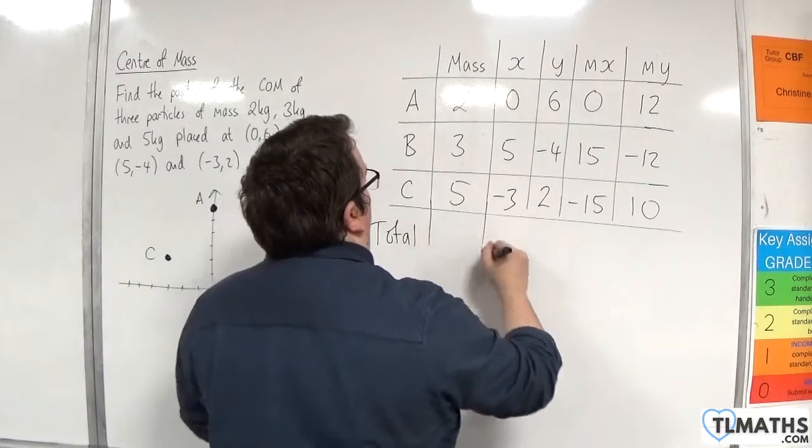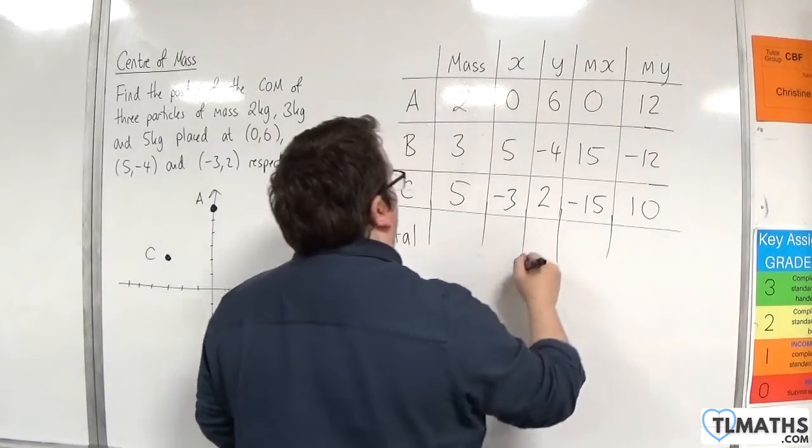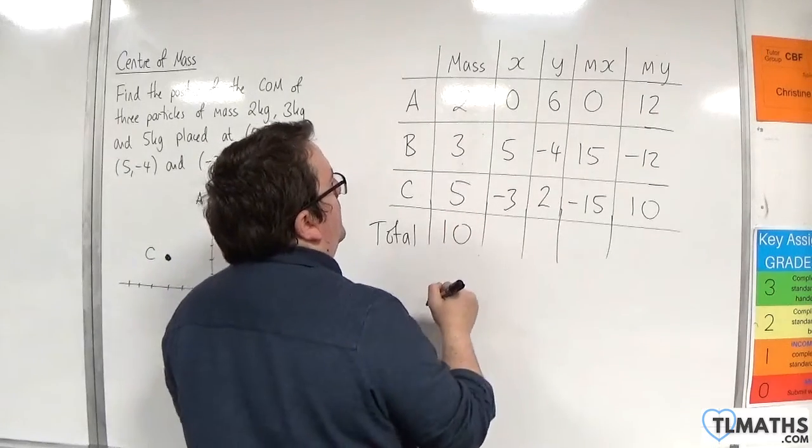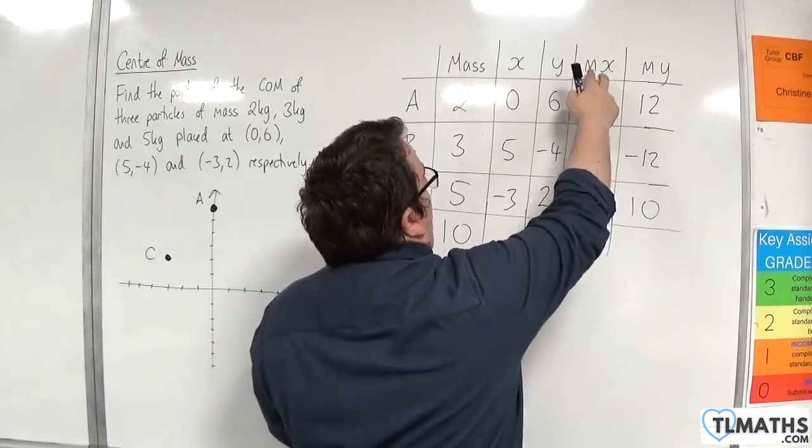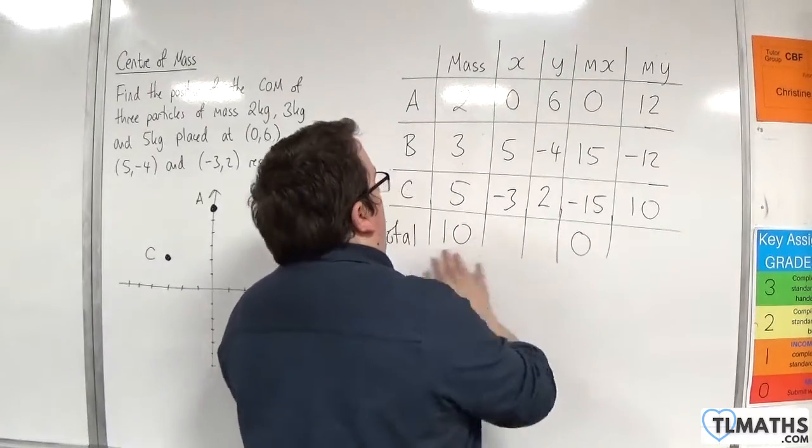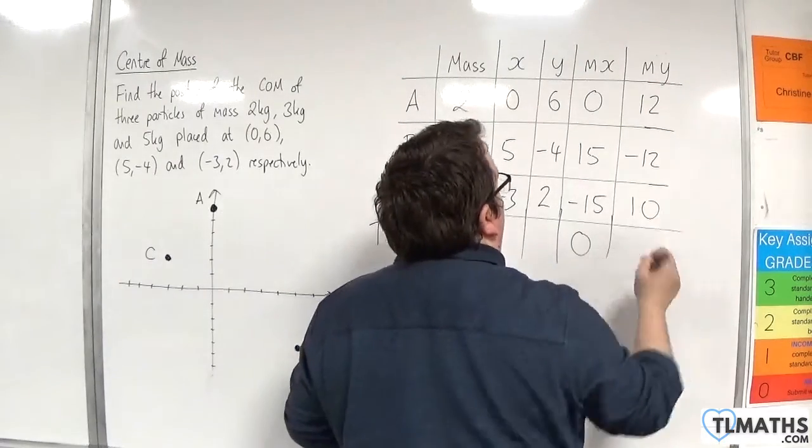So the totals I'm interested in are the total mass, which is 10, the total of m times x, which is 0, and the total of m times y, which is 10.